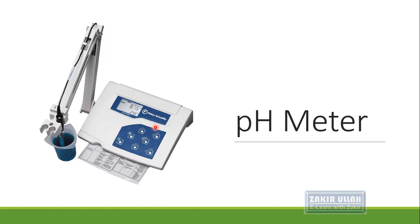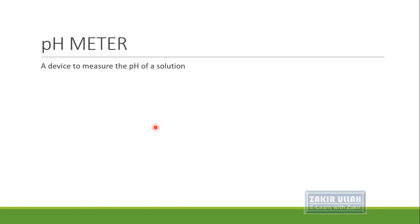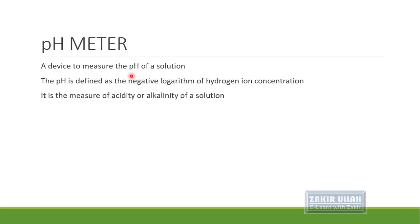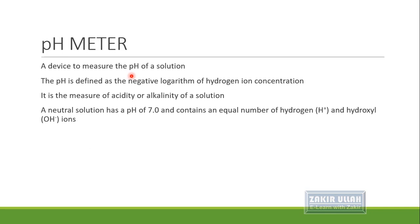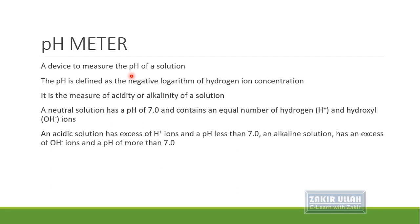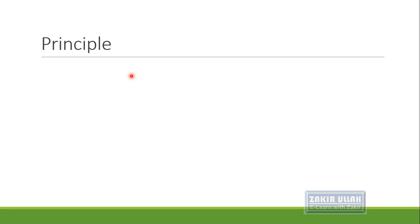Now, the pH meter is an instrument used to measure the pH of a solution. pH is the negative logarithm of hydrogen ion concentration — it measures the acidity or basicity (alkalinity) of a solution. A neutral solution has a pH of 7 and contains equal amounts of hydrogen ions and hydroxyl ions. An acidic solution has excess hydrogen ions with a pH less than 7.0, while in an alkaline solution the hydroxyl ions exceed hydrogen ions and the pH is above 7.0.